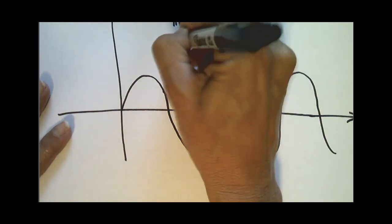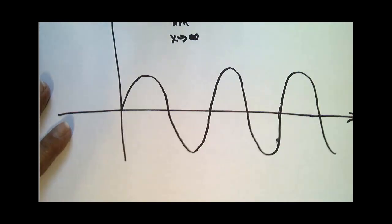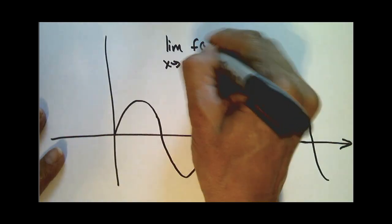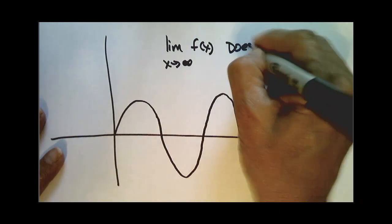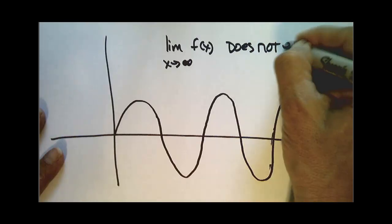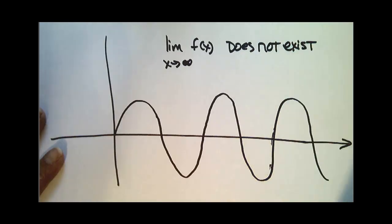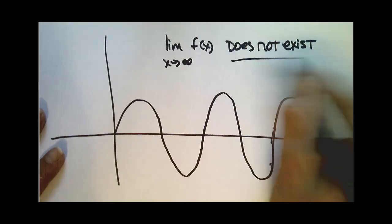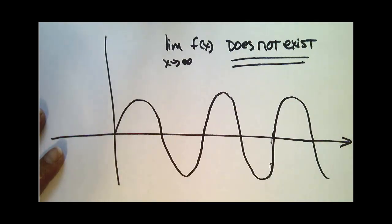So in this case, the limit as x approaches infinity of f of x does not exist, because it doesn't tend towards one number.